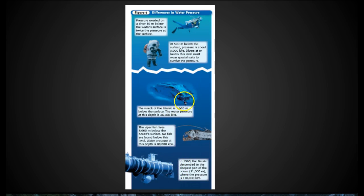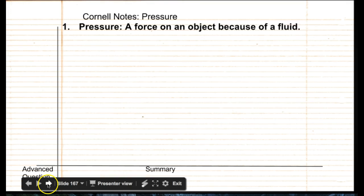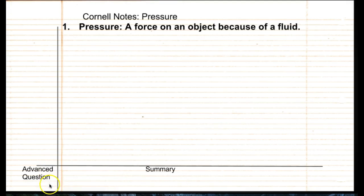So at the bottom where the Titanic is sunk or if you're in a submarine, there's going to be more pressure, 110,000 kPa which is Pascal units, because there is more fluid. So pressures are caused by fluids. Okay, when you're done with number one, let's move on to number two.